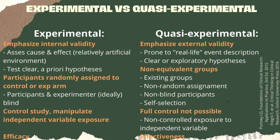Efficacy may be obtained in an experimental study, since it measures the possible harm in a controlled environment of the intervention. Meanwhile, effectiveness is more prone to real-world settings and is compared to the standard treatment.